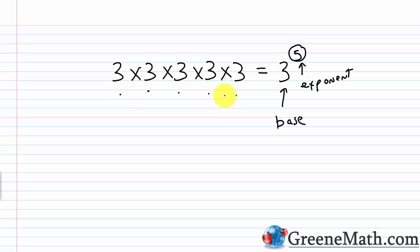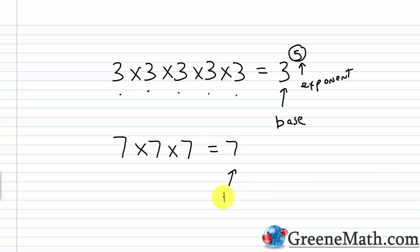For another example, let's say we had 7 times 7 times 7. The number being multiplied by itself is 7, so that's my base. And I have 1, 2, 3 factors of 7, so my exponent is 3.